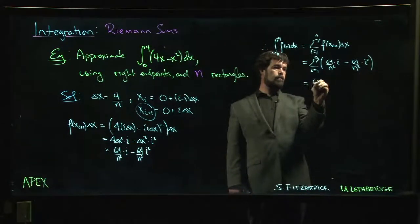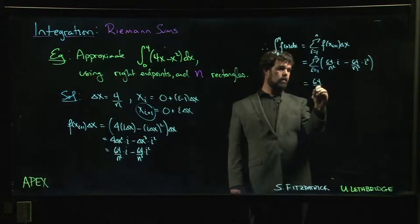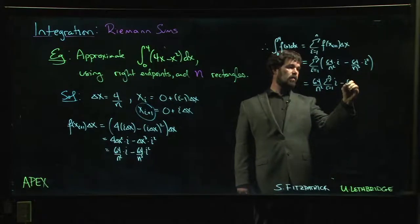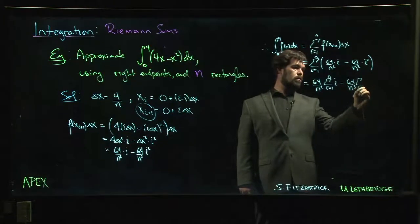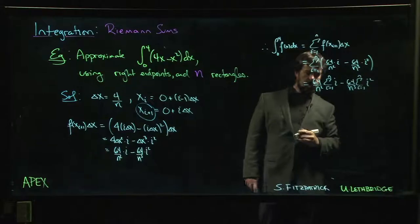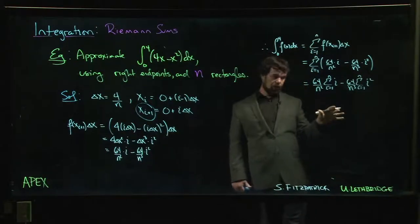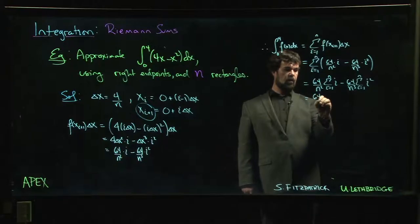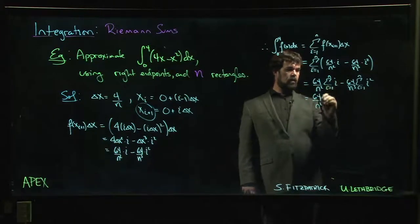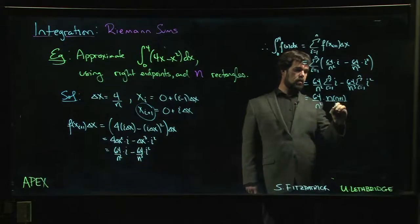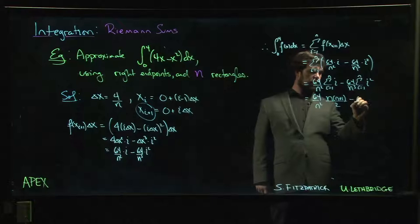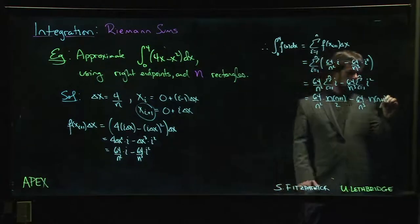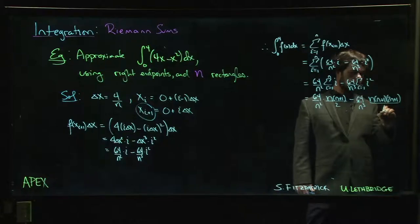So now bring that 64 over n squared out front, we have that, and 64 over n cubed out front. And now at this point we flip back to the summation properties. 64 over n squared, this is n times n plus 1 over 2. And 64 over n cubed times n times n plus 1 times 2n plus 1 over 6.